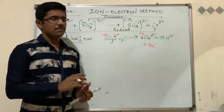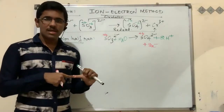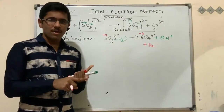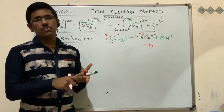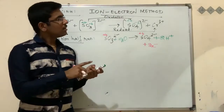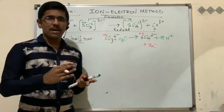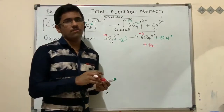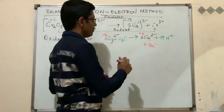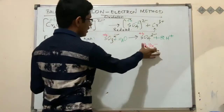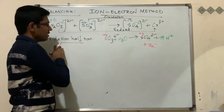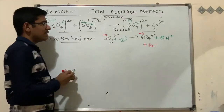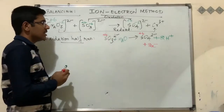The three key methods are: oxygen addition through water, hydrogen addition through proton, and charge balancing through electron addition. The oxidation half-reaction is now fully balanced.